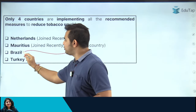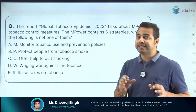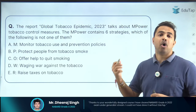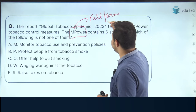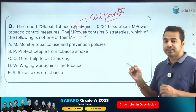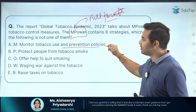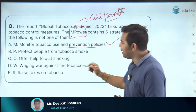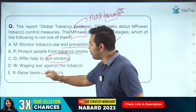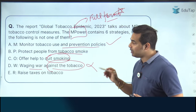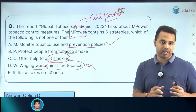There is a particular program called MPOWER which contains six strategies. This question is on those six strategies and their acronym — you must remember the full form as questions are asked on such program full forms in the exam. In the options, you have to identify which one has been mentioned incorrectly. 'W' stands for 'warn about the dangers of tobacco', but the option says 'waging war against tobacco', which is incorrect. Option D is the right answer.